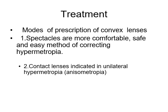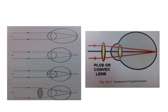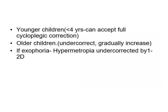In unilateral hypermetropia, aniseikonia causes a change in image magnification between both eyes, leading to confusion and inability to fuse images — so contact lenses are preferred. A convex lens placed in front of the eye focuses light on the retina. In younger children under four years, full cycloplegic correction can be accepted. In older children, slight undercorrection is done. If there is exophoria, hypermetropia is undercorrected by one to two diopters.